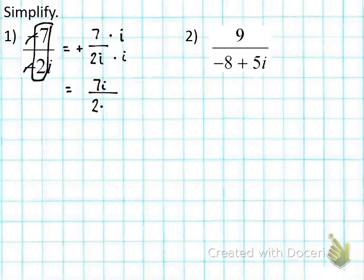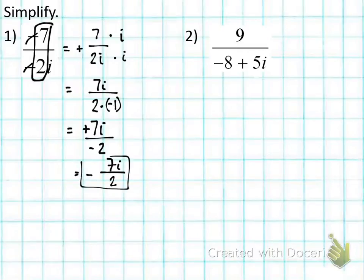which is 2 times i times i. Remember from yesterday, i squared is -1. Simplify: 2 times -1 is -2. So we got 7i over -2, right? And then we have a positive 7 over a -2. Positive 7 divided by -2, the whole term is going to be a negative answer. So we have -7i over 2. That's the answer to number 1.